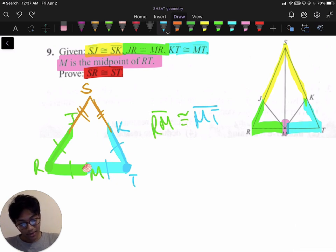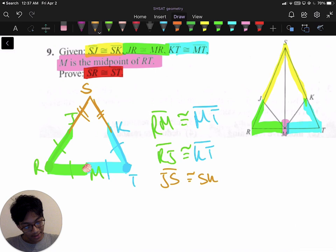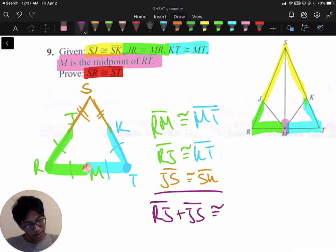You just proved it. Well, if RJ is congruent to KT, and you also know that JS is congruent to SK, then we can add those up and those line segments will still be congruent. So RJ plus JS, it will be congruent to KT plus SK.